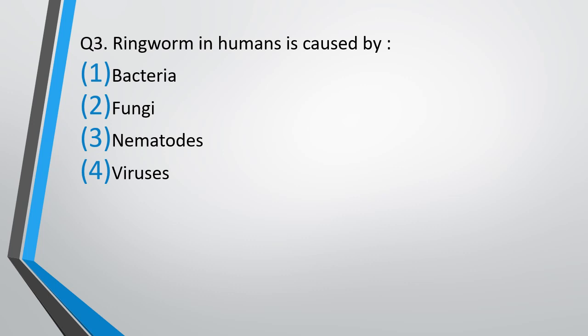Question number 3. Ringworm in humans is caused by: bacteria, fungi, nematodes, or viruses? The correct answer is option 2, that is fungus. Remember guys, don't confuse ringworm with nematodes. Ringworm is the name given to the lesion, not the organism. Ringworm is the lesion which is caused by fungus.